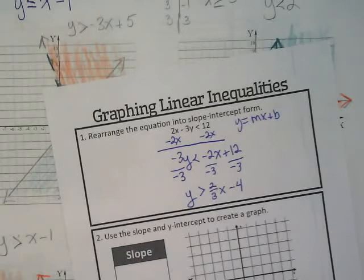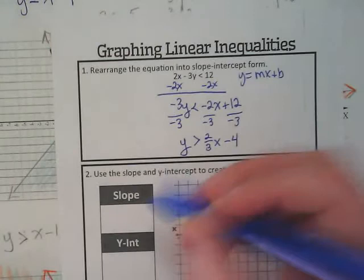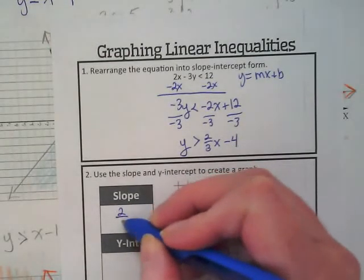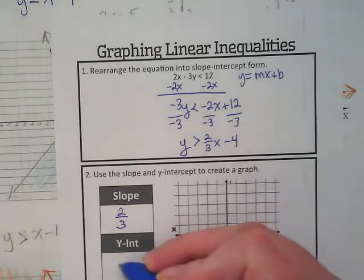Now to think about graphing this we need to think about our slope and our y intercept, which you guys did yesterday when you created this from equations. Our slope in this case is 2 over 3, and our y intercept is negative 4.